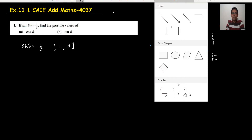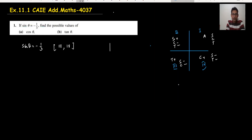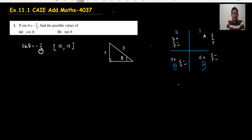The second thing is we just need to draw a right-angle triangle. This is theta. Sine is opposite upon hypotenuse, so opposite is 1 and hypotenuse is 3. Don't worry about the negative sign. Now just do one thing: find the unknown side, the unknown base. We use the Pythagoras theorem: 3 squared equals x squared plus 1 squared.